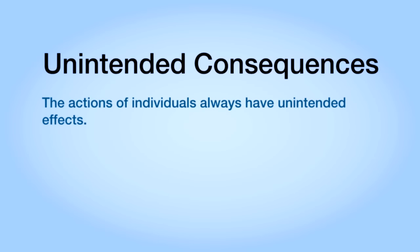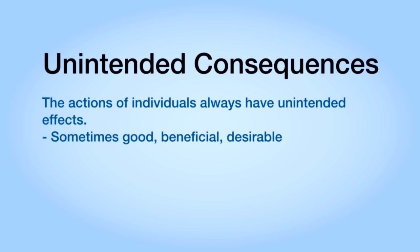Economists talk a lot about unintended consequences, and it's important to understand what we mean. We don't mean that individuals don't intend to achieve things when they go out in the world and act. Of course they intend things — good things, bad things. What we do mean is that these actions of many individuals typically come together to create a larger outcome, and it's that larger outcome that no one intends. Sometimes these are good, beneficial. Sometimes these larger outcomes are undesirable.